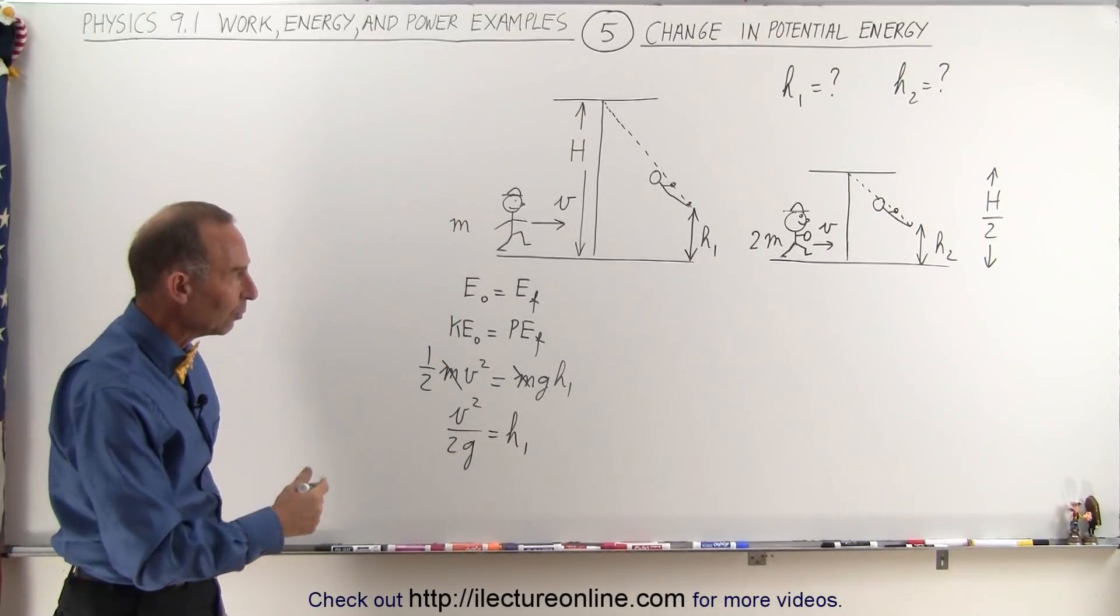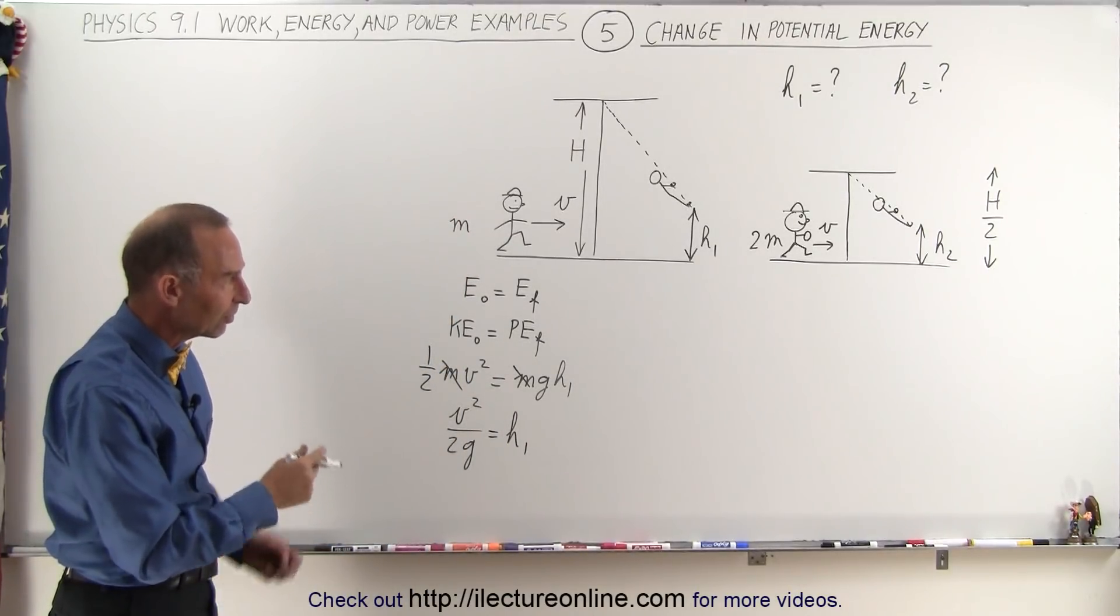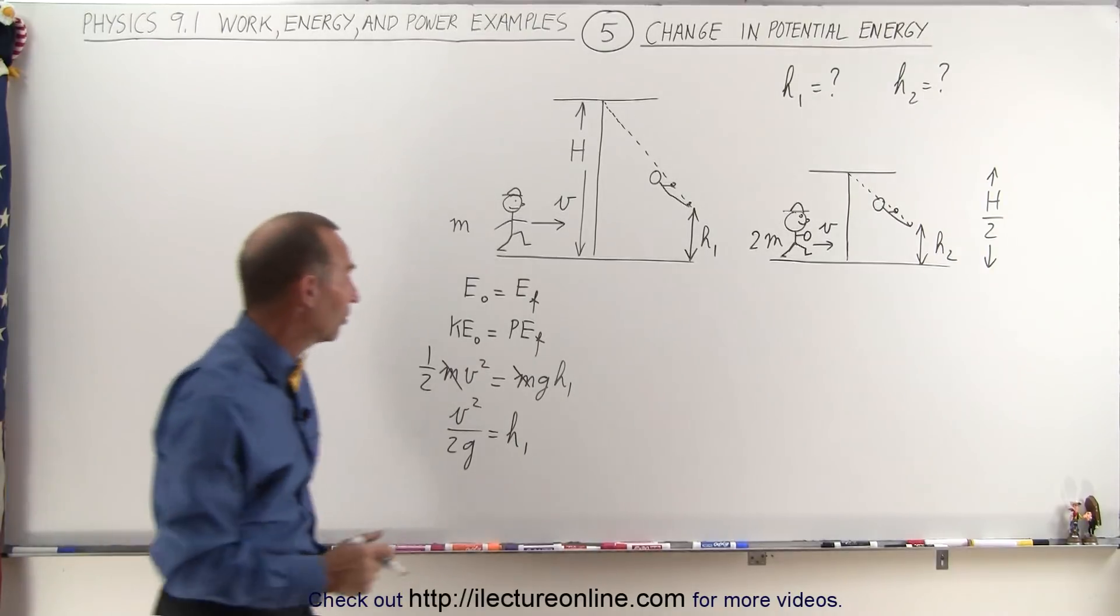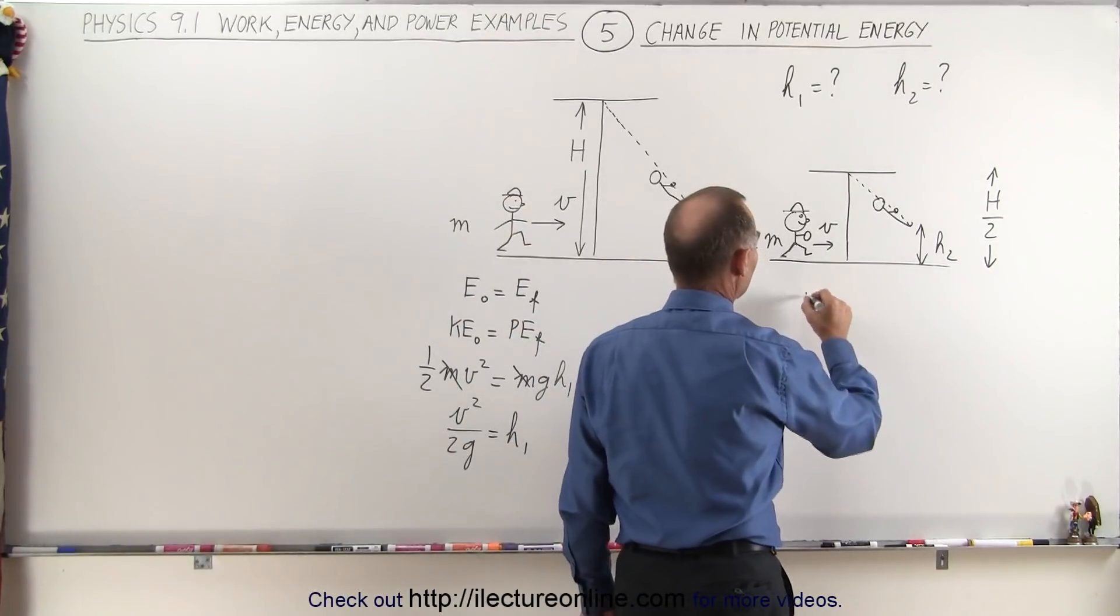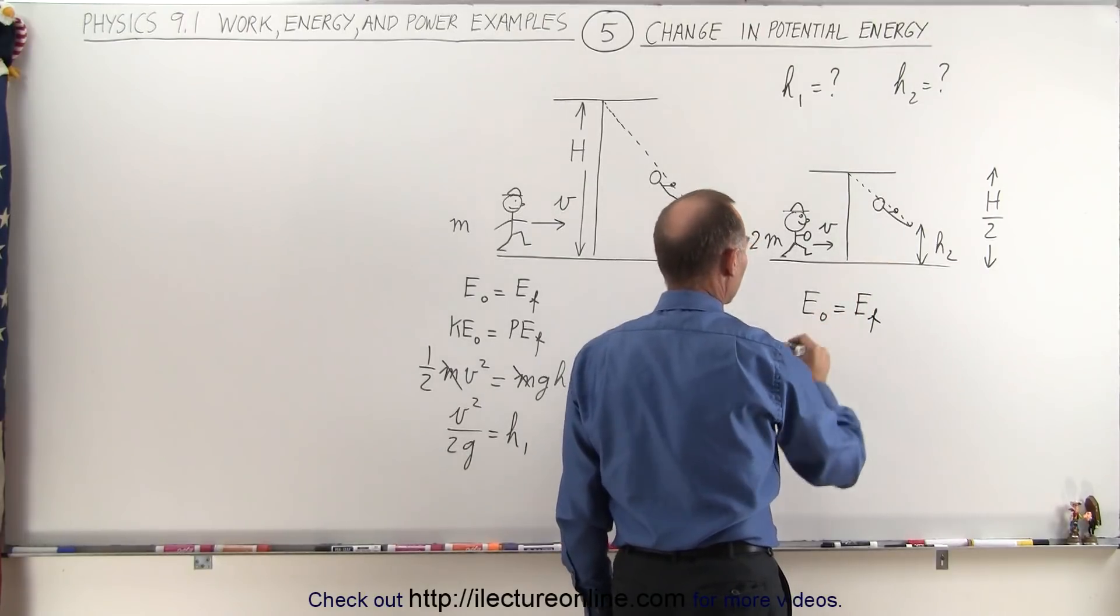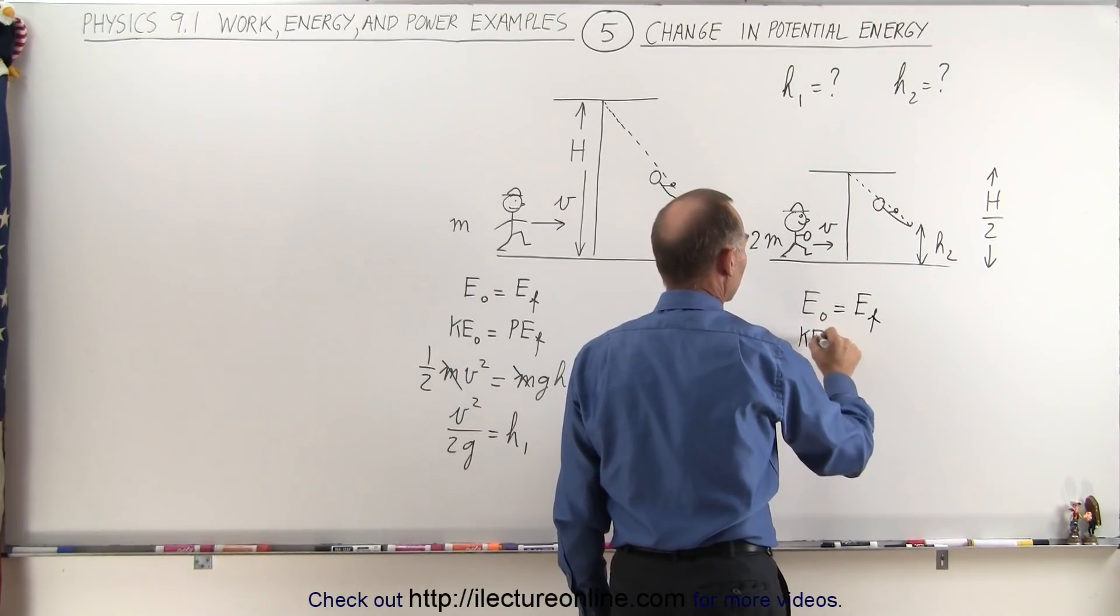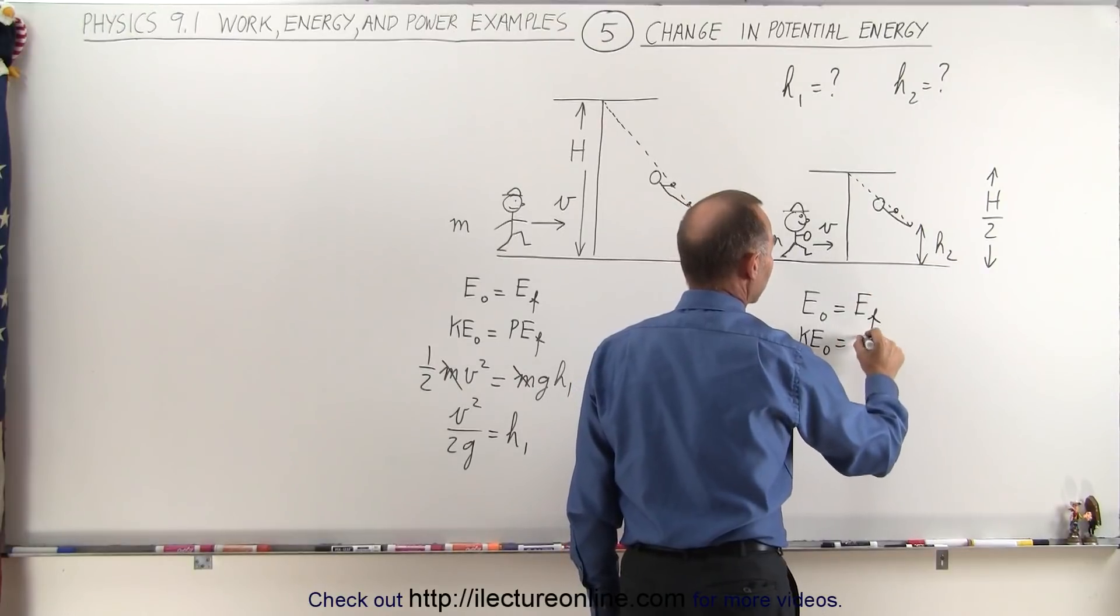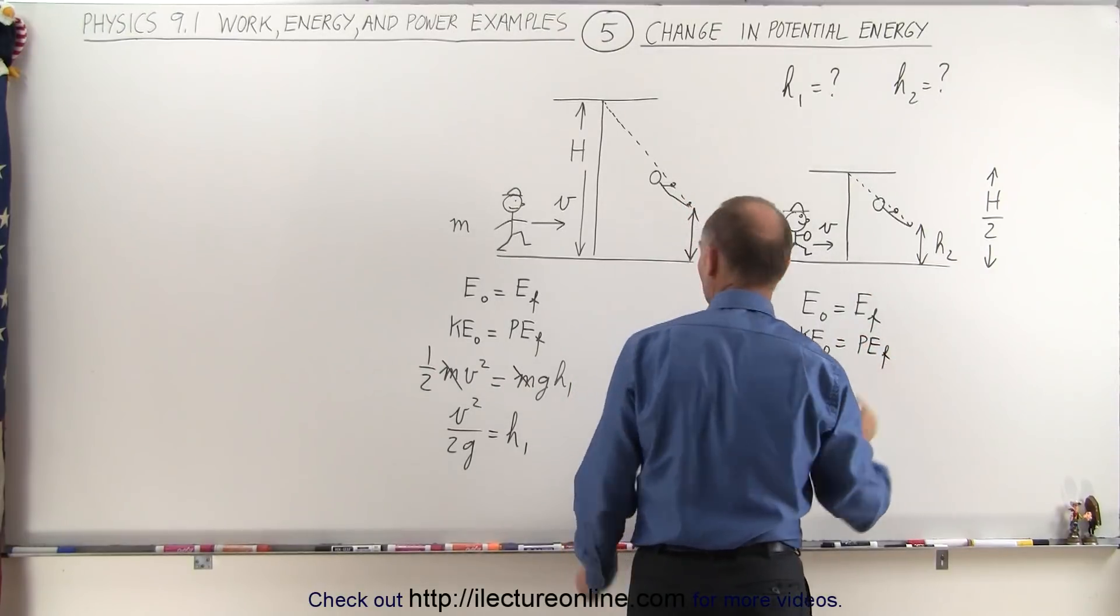Now let's go over to the second case with the bigger runner, same velocity, grabs onto the rope. What happens there? Again we can say that energy initial is equal to energy final. The initial energy is kinetic energy initial and the energy final is potential energy final just like we did before.